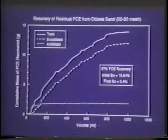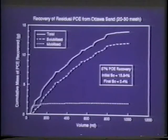The first PCE experiment we ran, however, was not the one I showed you earlier. Instead, when we introduced the surfactant solution, immediately 13 percent of the PCE came right out the end of the column — it was mobilized. We were alarmed. We tried it again and the same thing happened a second time. Then we started thinking about what we forgot — and we forgot about gravity, buoyancy, and density. PCE is very dense, about 1.6 times the density of water.